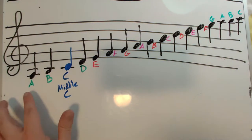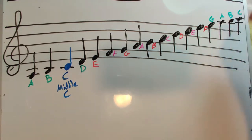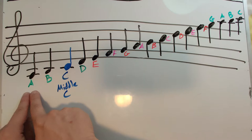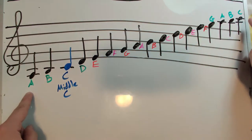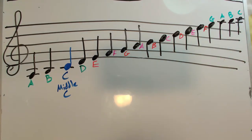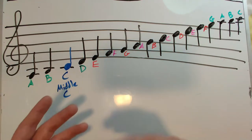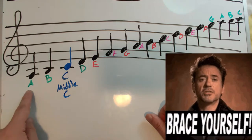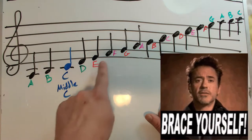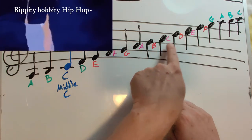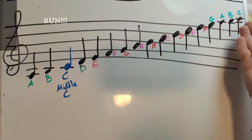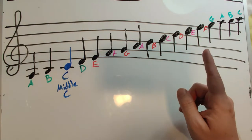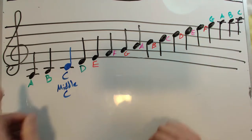So now that we have talked about all the ledger lines and the spaces below the staff and above the staff, we have everything labeled from a low A, two ledger lines down below the staff, all the way to a high C, two ledger lines above the staff. If I were to sing it exactly as it's written in the treble clef, remember treble clef is for higher pitched instruments, it's going to sound like this.